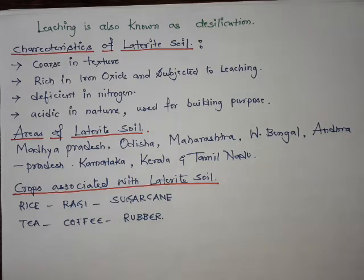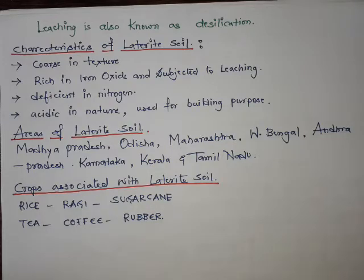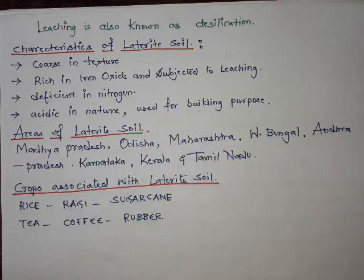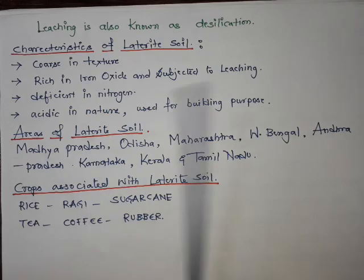For board exams, the similarities between red soil and laterite soil are: both soils are red in color, both are acidic in nature, both are subjected to leaching, and both are deficient in minerals and organic nutrients. These are the key characteristics of red soil and laterite soil to remember.